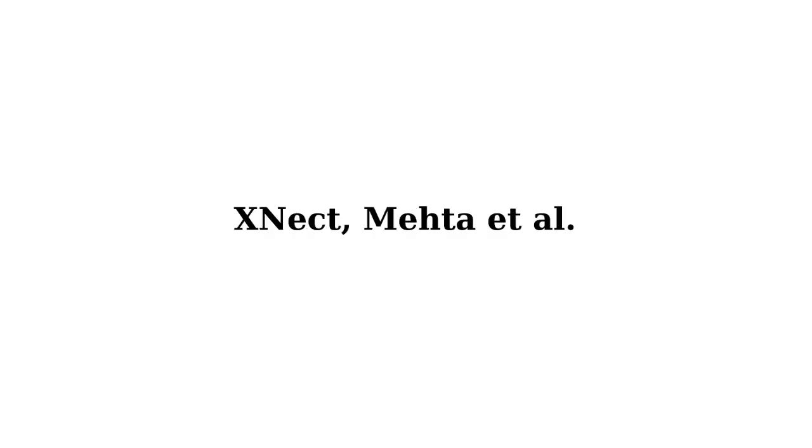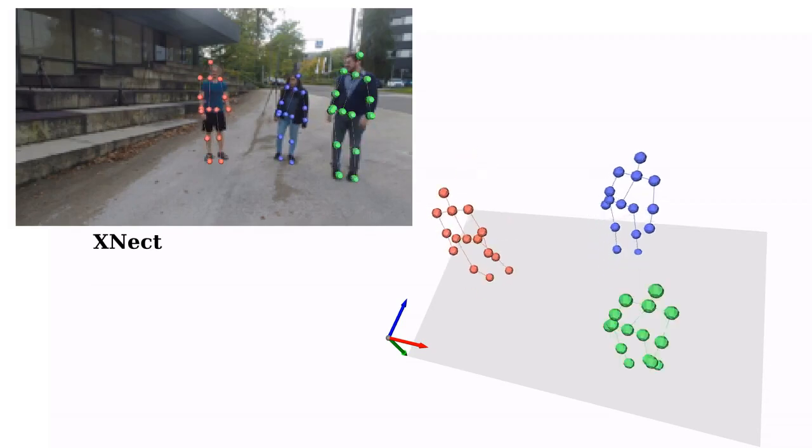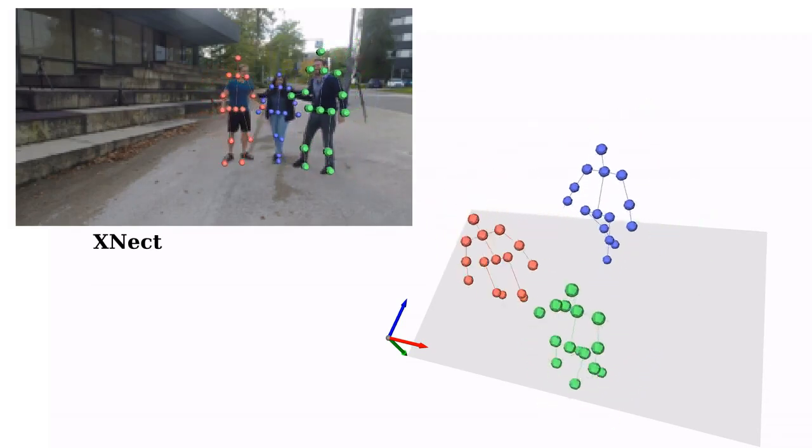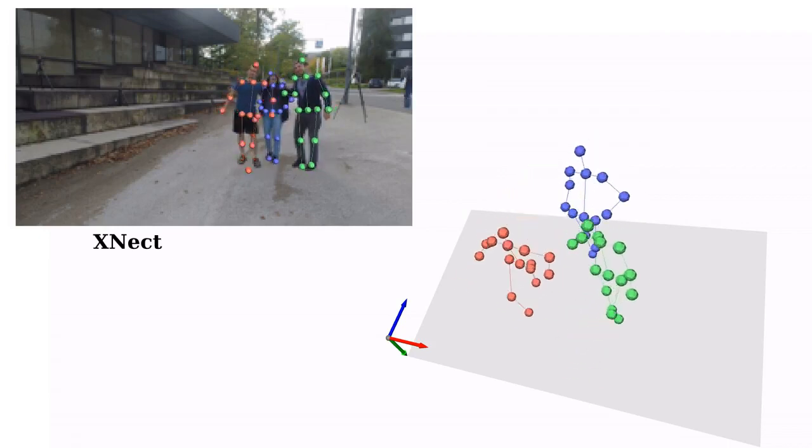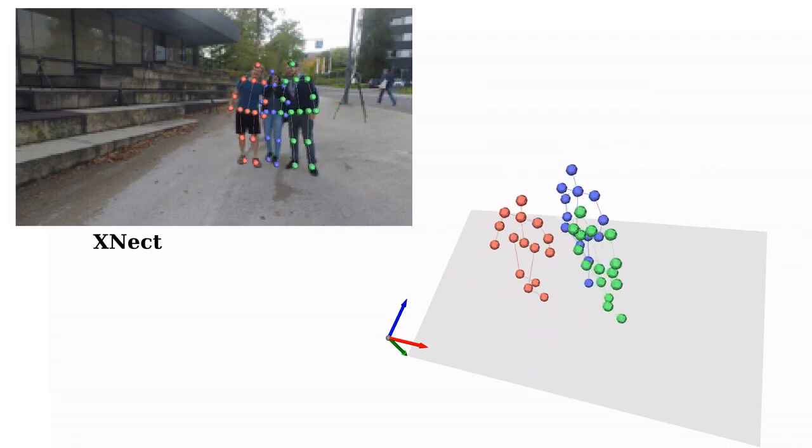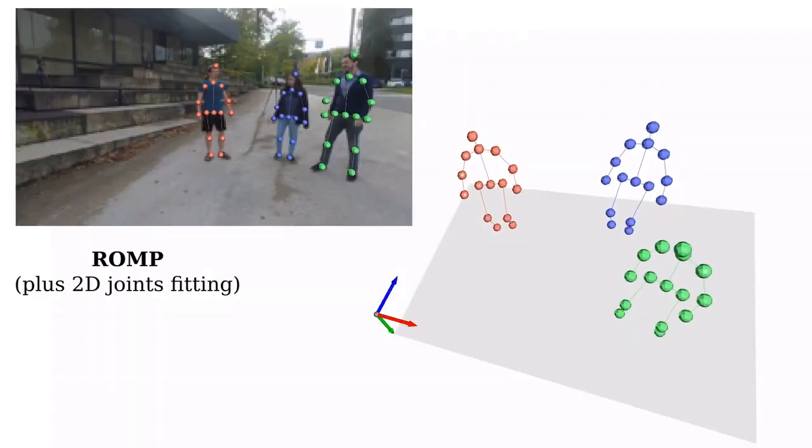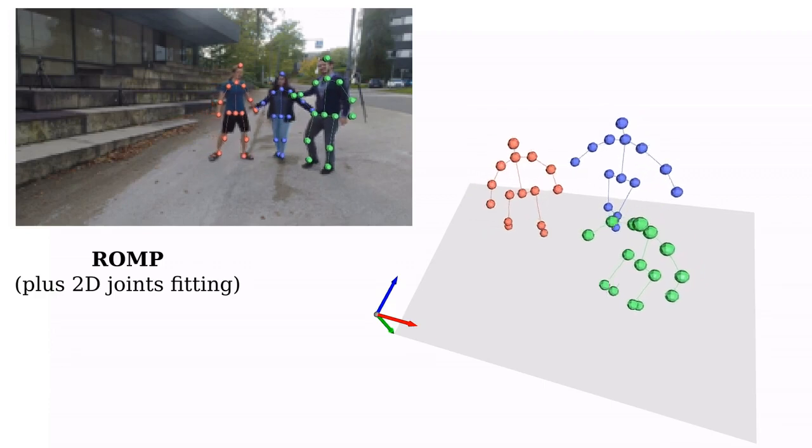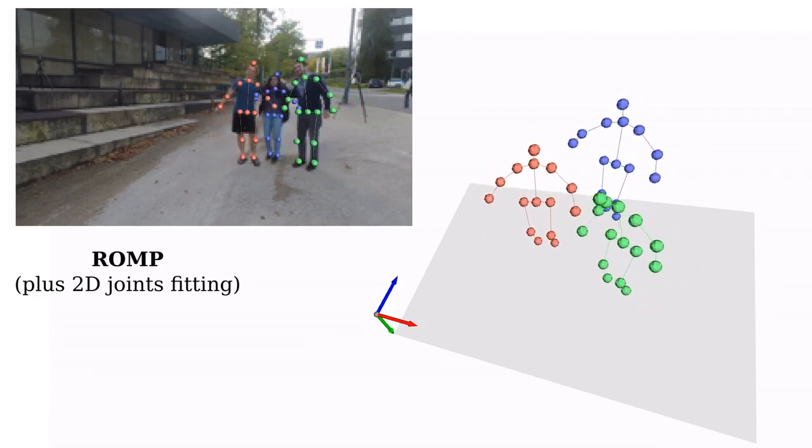We compare our method with the most related work from the literature. ExPose, by Choutas et al., is not able to estimate the scale of the humans, and the IK fitting process can result in unstable poses in absolute 3D coordinates. As our baseline, we fit the SMPL predictions from ROMP into 2D joint detections. Note how this approach fails to estimate a coherent depth for humans with different sizes.